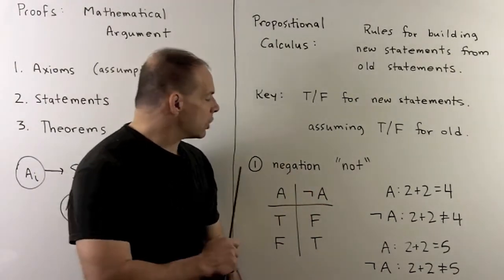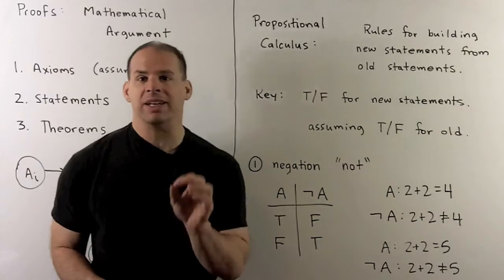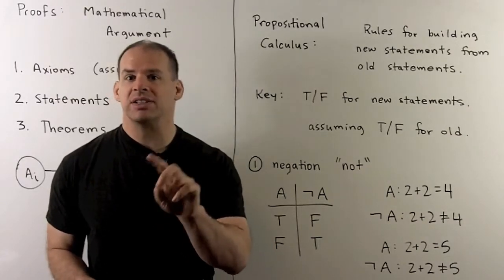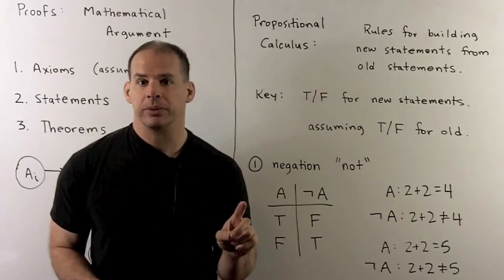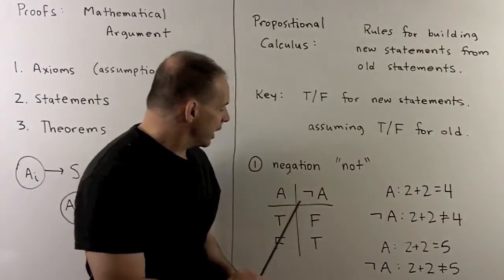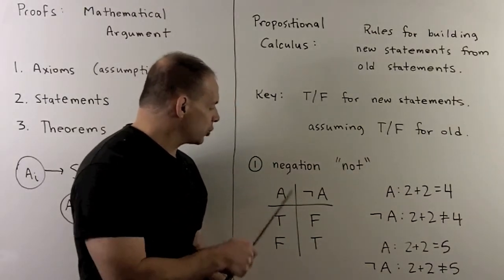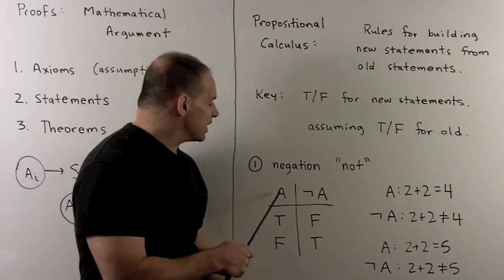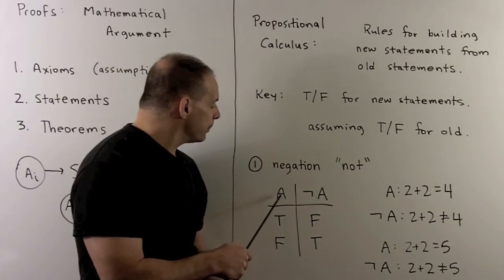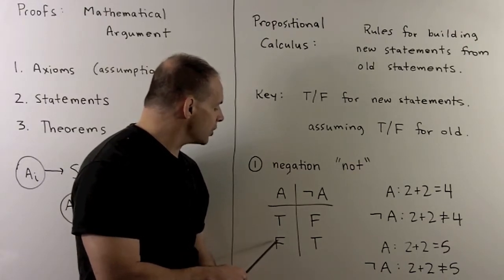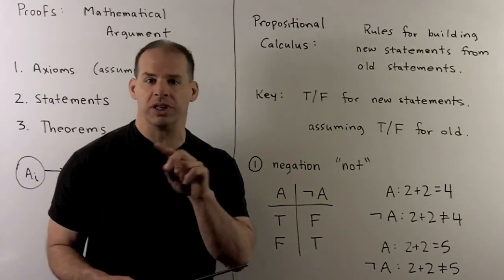Now, for our first construction, we're going to have negation. So, this is the not construction. The idea here, if I have a statement A, what we'll do is set up a truth table. So, if I have a single statement, the possibilities are, A is either true or false.